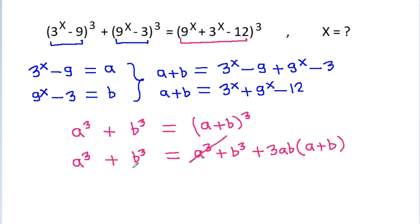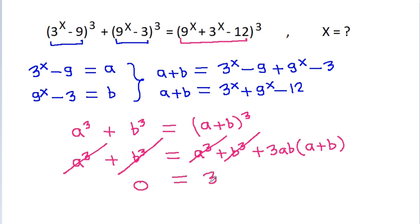And a cubed will get cancelled, b cubed will get cancelled. So, 0 is equal to 3ab times a plus b.